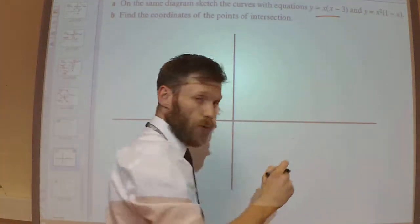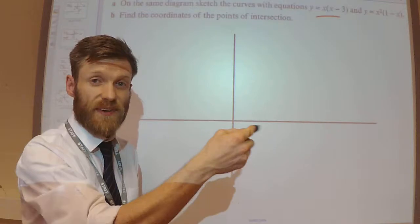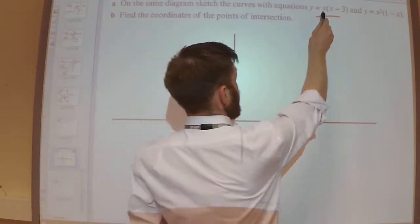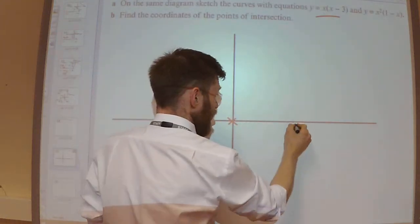So this is a quadratic. I know that because if I was to expand the brackets out, I'd get an x². I know it's going to go through at 0 and at 3.